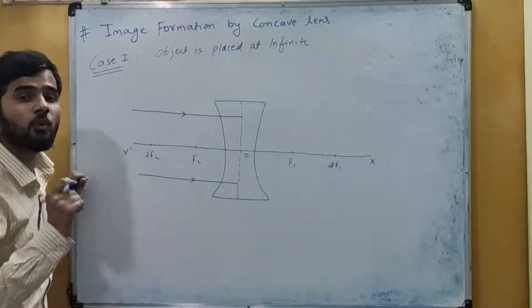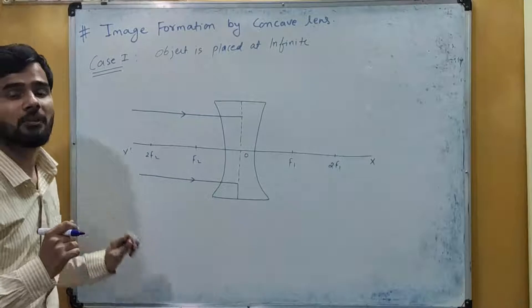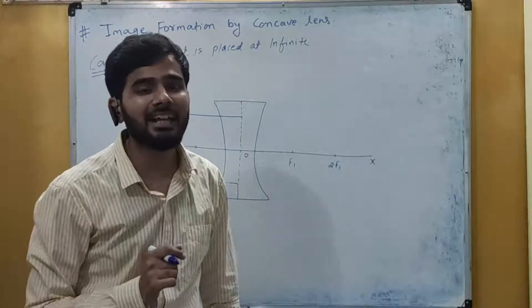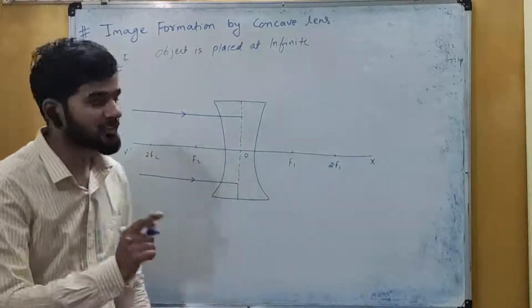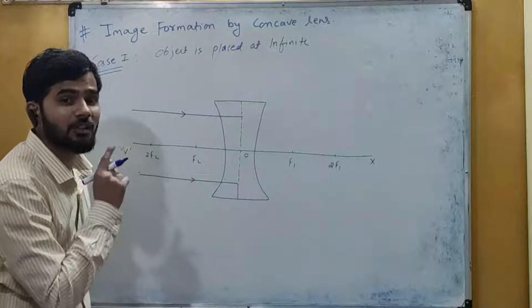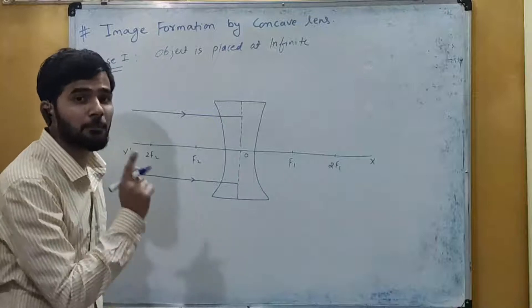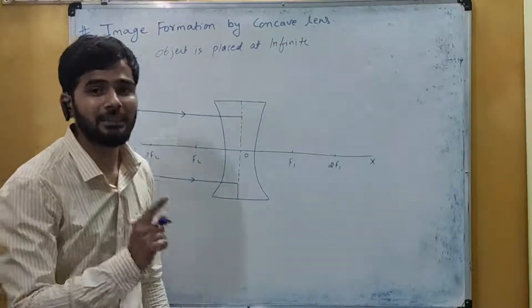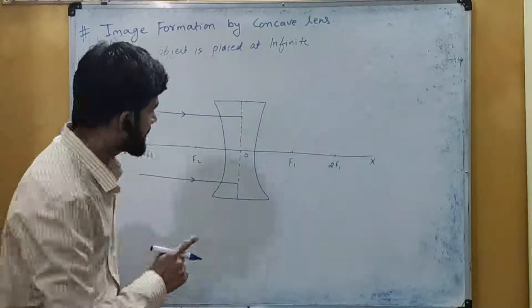Now, Rule Number 1 says: if a light ray is parallel to the principal axis, then after refraction, it appears that it is coming from the principal focus.